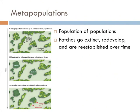Population ecologists also think beyond the population. Metapopulations are basically populations of populations. Ecologists can look at the numbers of individuals across several populations and compare them — this is known as metapopulation ecology. In metapopulation ecology, some patches can go extinct, be redeveloped, and reestablished over time.